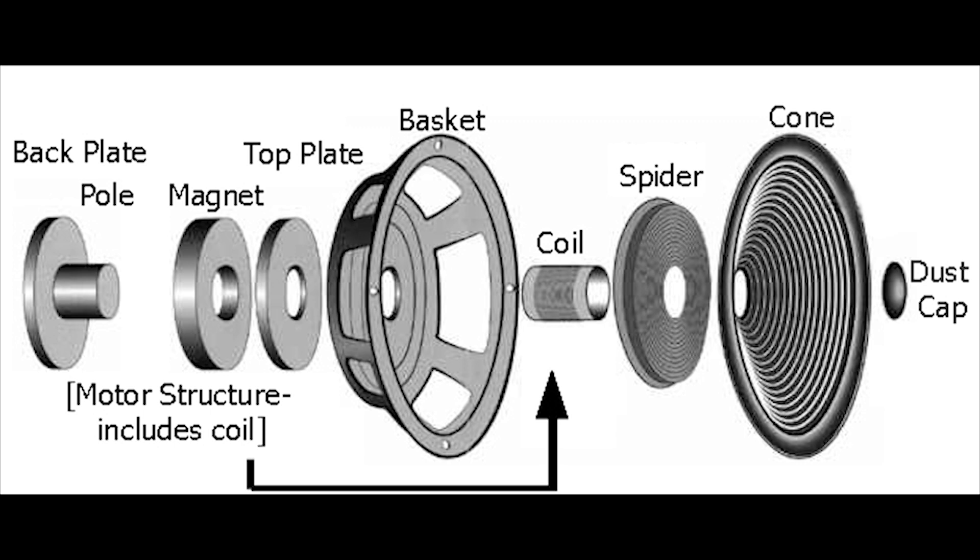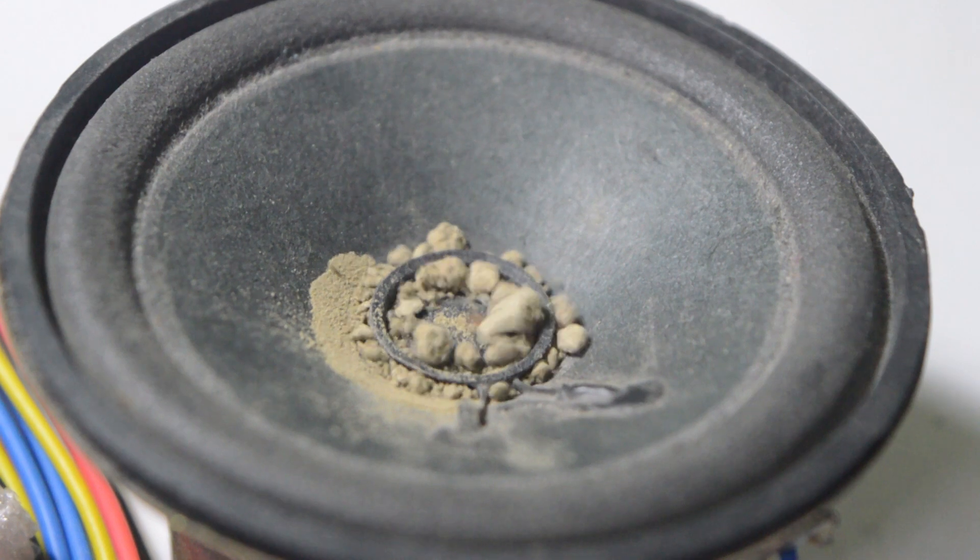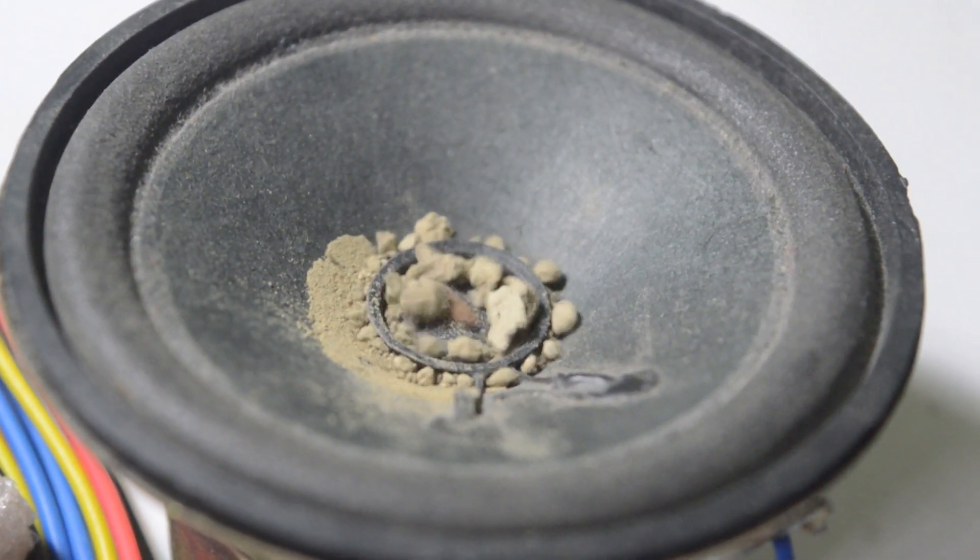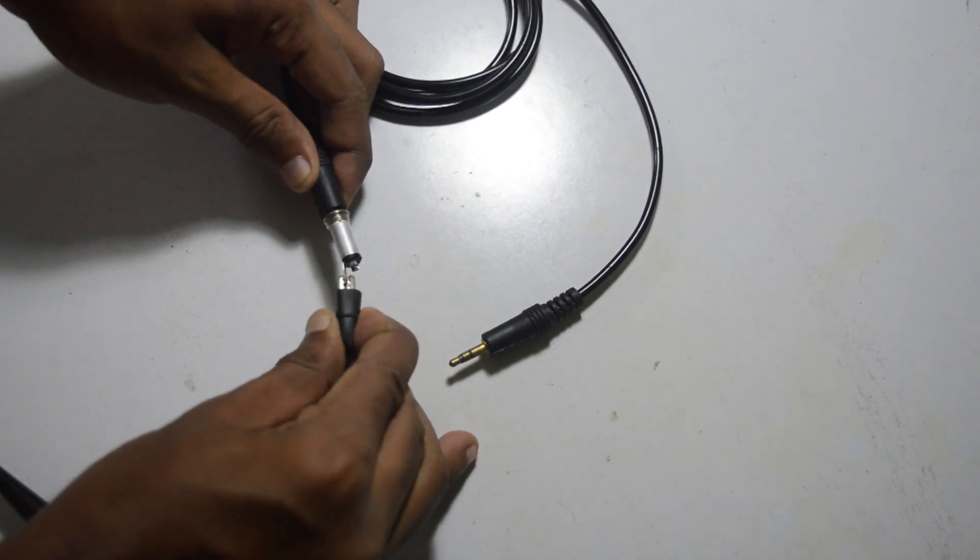The construction of the speaker is different. The coil is placed on a pole attached to a disc magnet. When energized with an audio signal, the coil oscillates up and down with respect to the amplitude. The cone is glued with the coil former and the spider secures the coil. During oscillation, the cone pushes the air which creates audible sound waves.